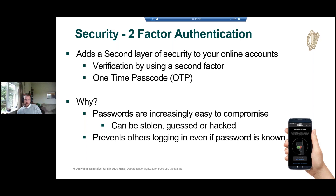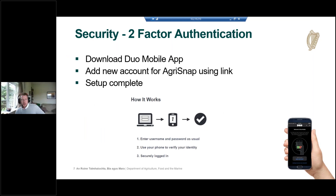Unfortunately, all external users now have to log in this way, and we're trying to make it as simple as possible. The initial setup of the two-factor authentication requires establishing a link between the AgriSnap app and the Duo mobile app. We'll provide a URL — it should sit within the GLAM system — that you can click to start the initial setup. Once it's all set up, on login you just enter your username and password as normal, verify with the OTP — the six-digit code — and then you are securely logged in.